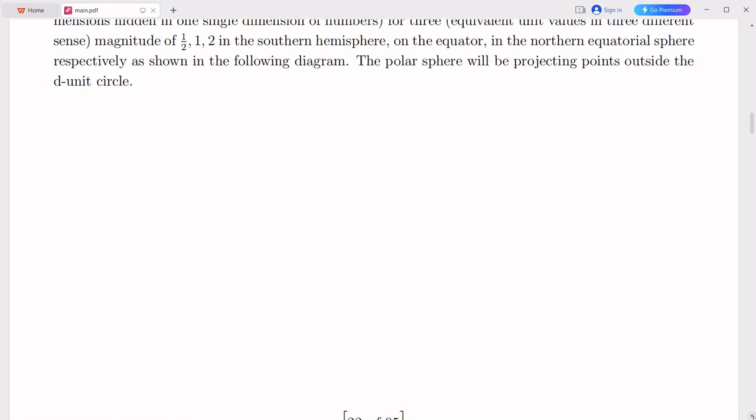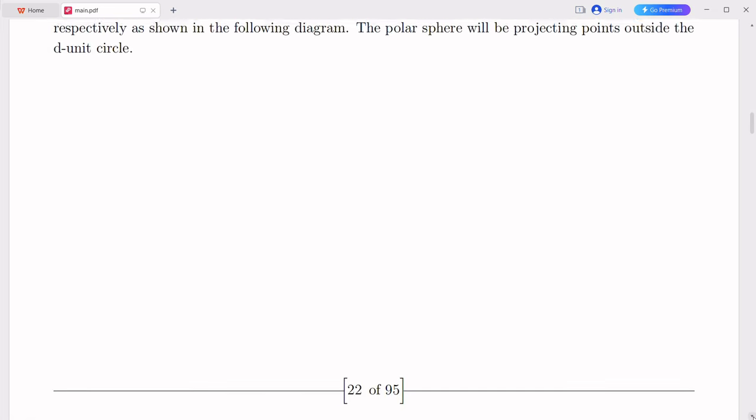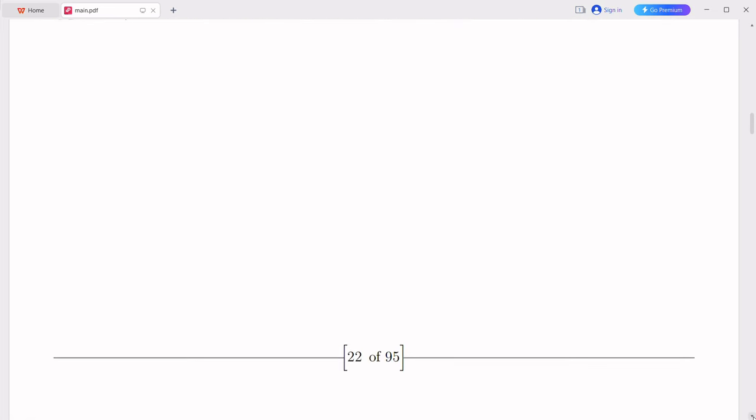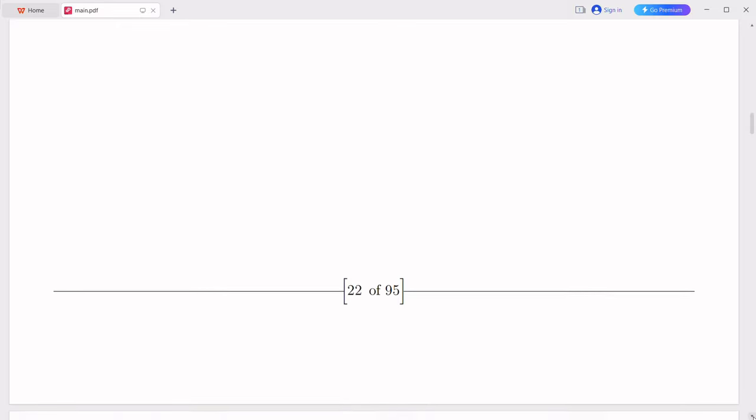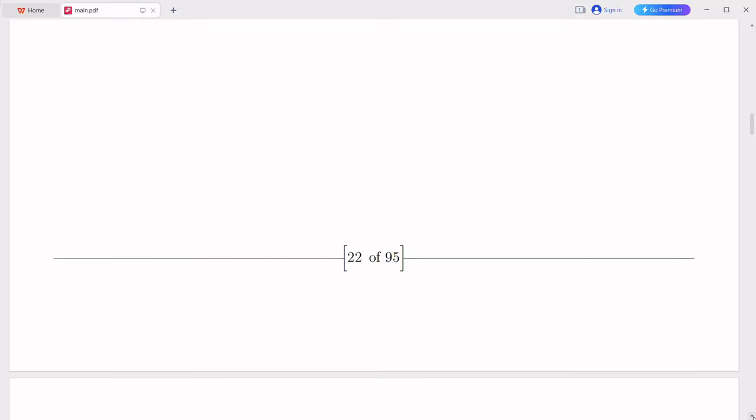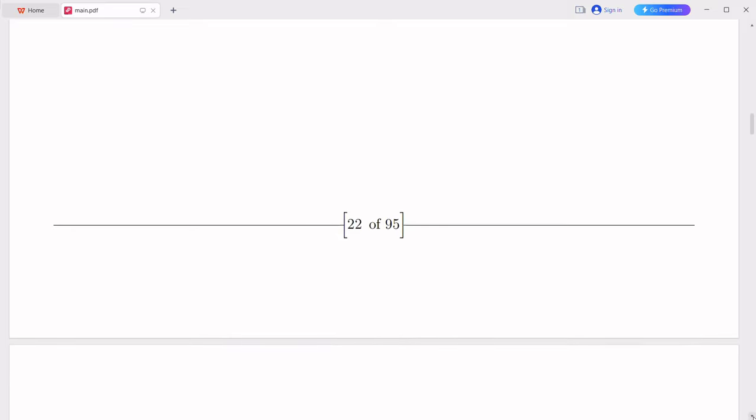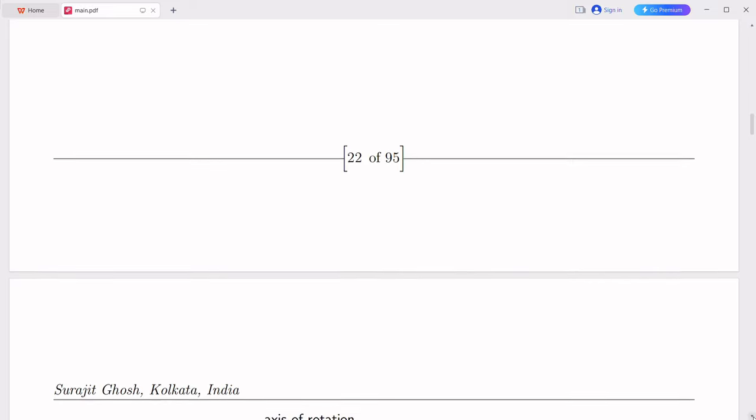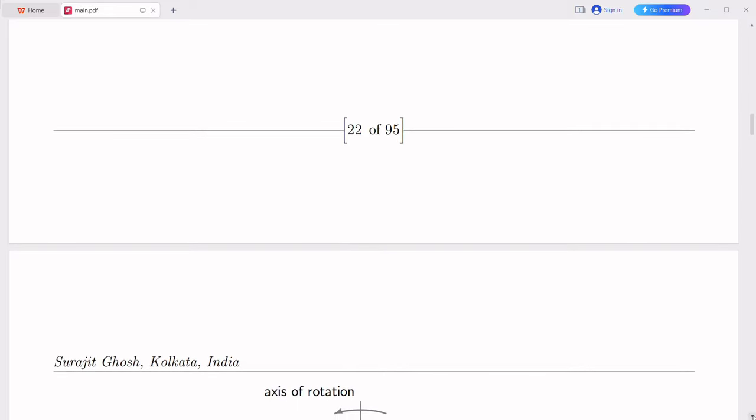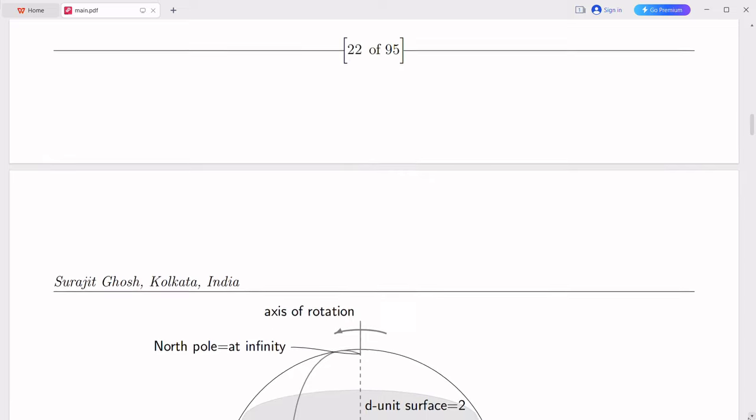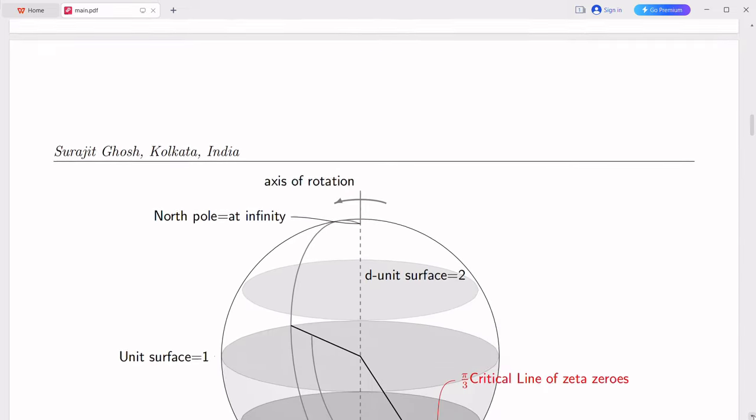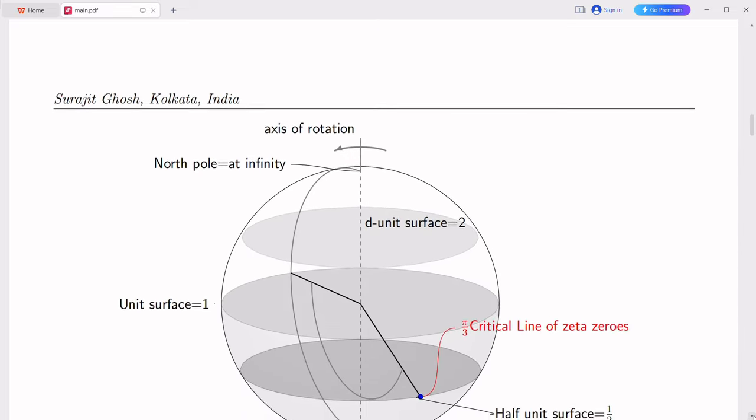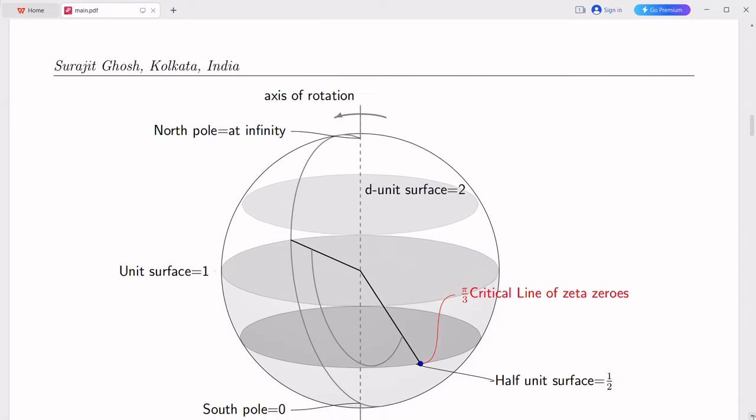In conclusion, my journey has taken me from the realm of negative factorials to the depths of the Riemann hypothesis, from the π/3 angles to the mysteries of dark energy, and from the fine structure constant to the Charles's ratio. Along the way, I have encountered fascinating connections and tantalizing hints of a profound underlying order in the universe. Although many questions remain unanswered, I am filled with a sense of awe and excitement for what lies ahead in the ever-evolving quest for knowledge and understanding.